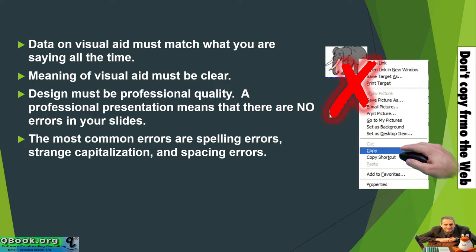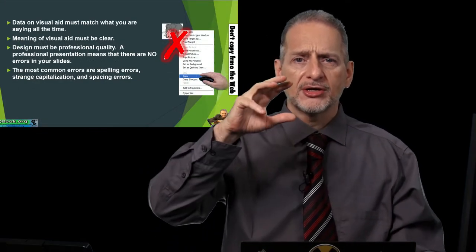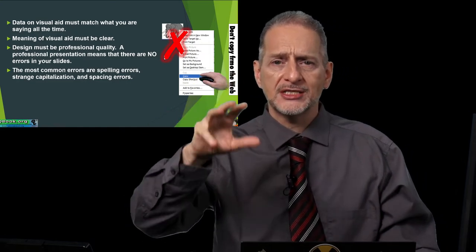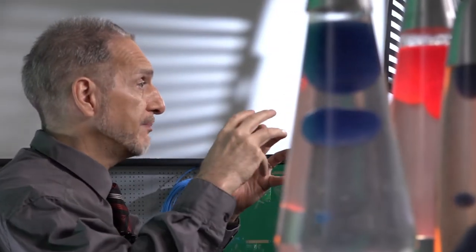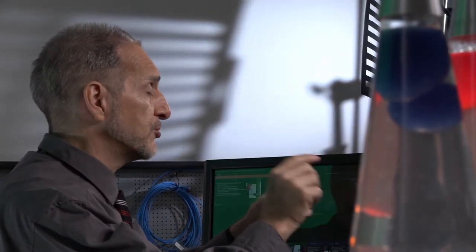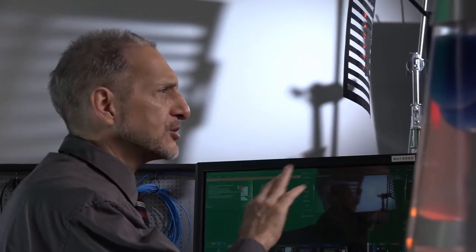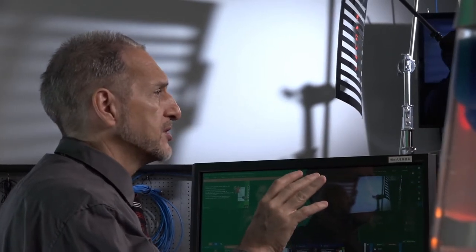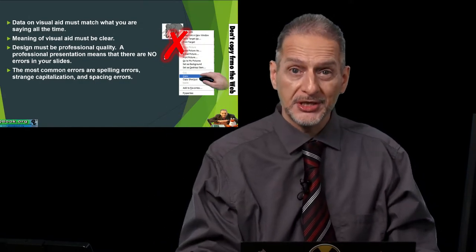The most common errors are spelling errors, strange capitalization, and spacing errors. A very common mistake is when moving from Chinese into PowerPoint or translating into English — information copied from Word into PowerPoint can have weird formatting because the font is a Chinese font, or the spacing or punctuation is Chinese. This looks very unprofessional and confuses people, so make sure your formatting is complete and correct.